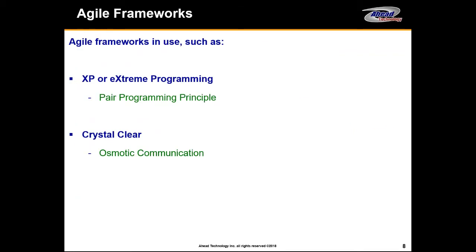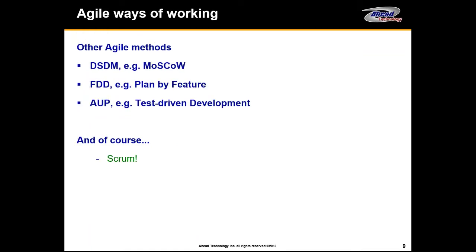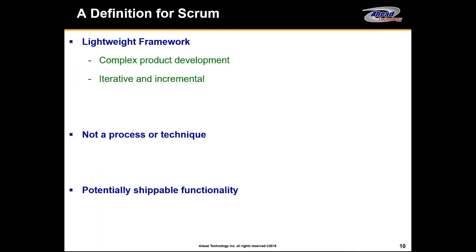Agile is also associated with a number of other frameworks — things like Extreme Programming, Dynamic System Development Methods, and Scrum, which is the most known in the industry today. All of these are different Agile methods to support the overall approach. We talk about it as a lightweight framework, but don't be fooled — although simple in concept, it is a bit difficult. If not done properly it won't provide the results you're hoping for. It's a framework, not a process, and you want the ability to deliver shippable products at the end of your sprint.